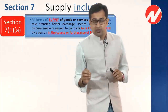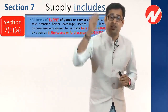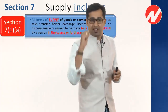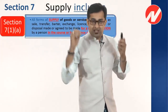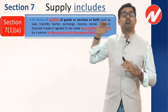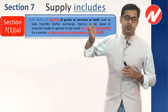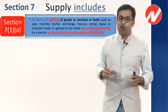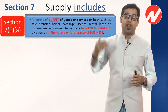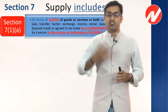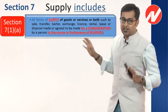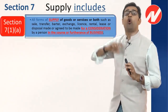Supply requires any form of disposal — sale, transfer, barter, exchange, license, lease, rental, or any other form of disposal. Even if you dispose of something as scrap, we will call it supply because supply is a very broad definition. So supply includes all forms of supply of goods or services or both — such as sale, transfer, barter, exchange, license, lease, rental, or any other form of disposal.